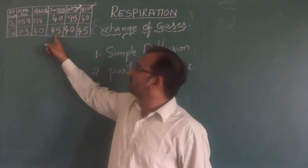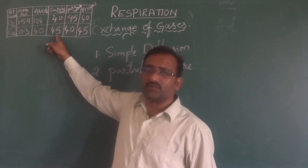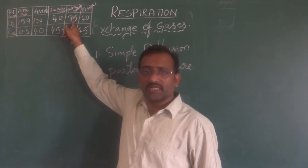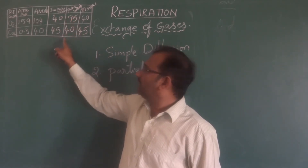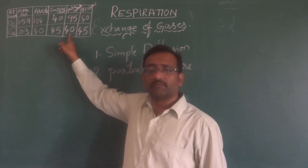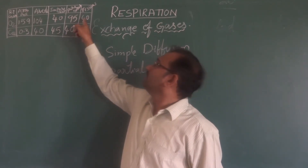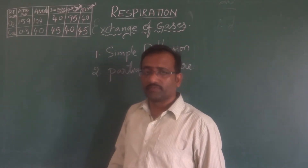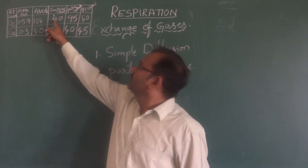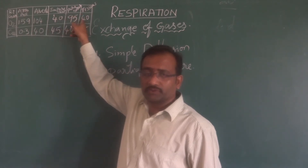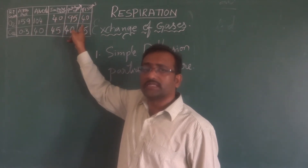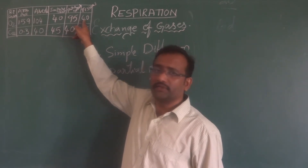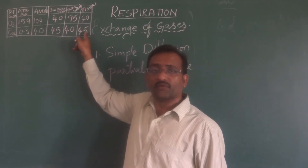In the impure blood, oxygen partial pressure is 40 and CO2 is 45. In the pure blood, oxygen partial pressure is 95 and CO2 is 40. In the tissues, oxygen partial pressure is 40 units and carbon dioxide is 45 units. This table is most important to understand the exchange of gases.